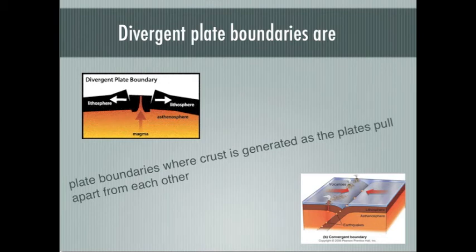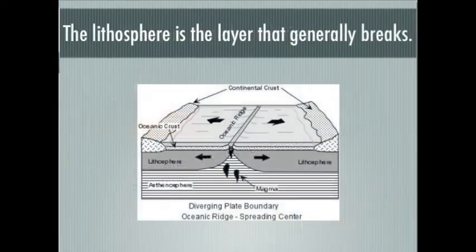At mid-ocean ridges, the divergent plate boundary is the line between two plates where they are moving apart. This boundary is formed over the rising plume of a mantle convection cell. Plates move away from each other, which is caused by the convection cell.